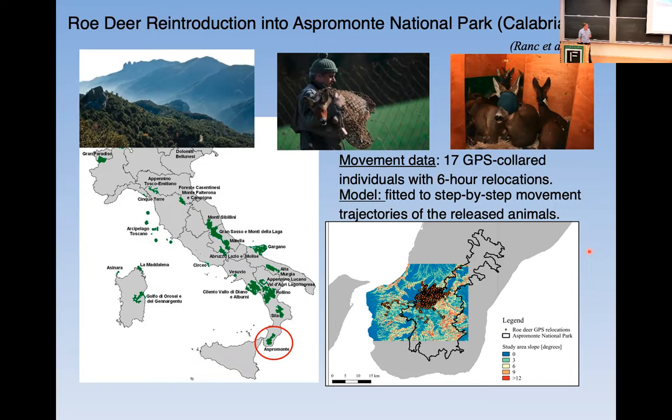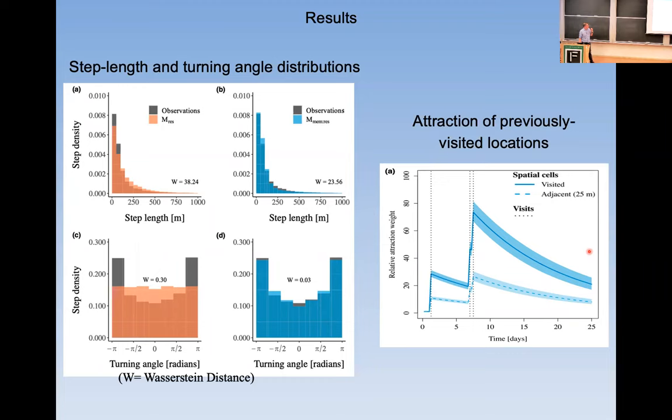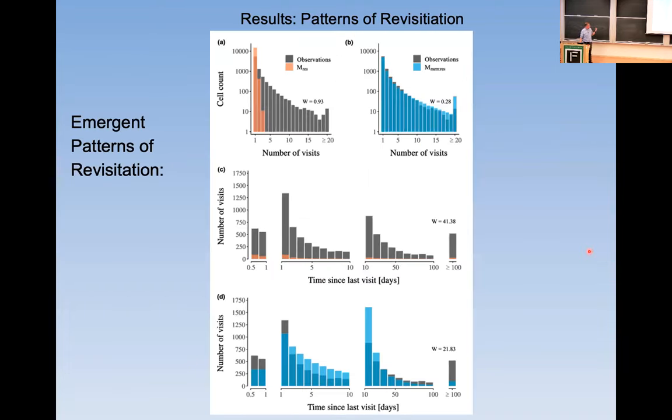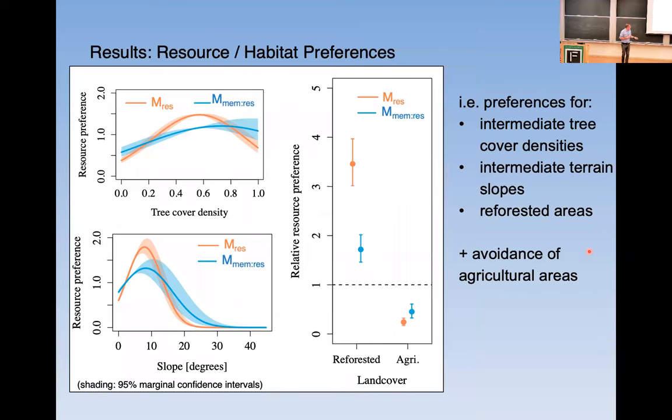And so you see the dynamic of how resource preferences and memory interact as the animals move around that novel landscape. And what we've been able to show is that essentially a model in which you incorporate memory, those are the ones shown in blue, the memory plus resources, essentially they fit the data much better in terms of the patterns of step length distributions. You get predictions for patterns of previously visited relocations, and then we can look at emergent patterns like patterns of revisitation and show that when you incorporate memory, you capture the pattern of revisitation defined here in terms of number of visits or time since last visits much, much more realistically. You also modulate the estimates of how the animals respond to resources. In essence, because it's teasing out the memory component of response to the environment from the intrinsic response to the underlying resources.